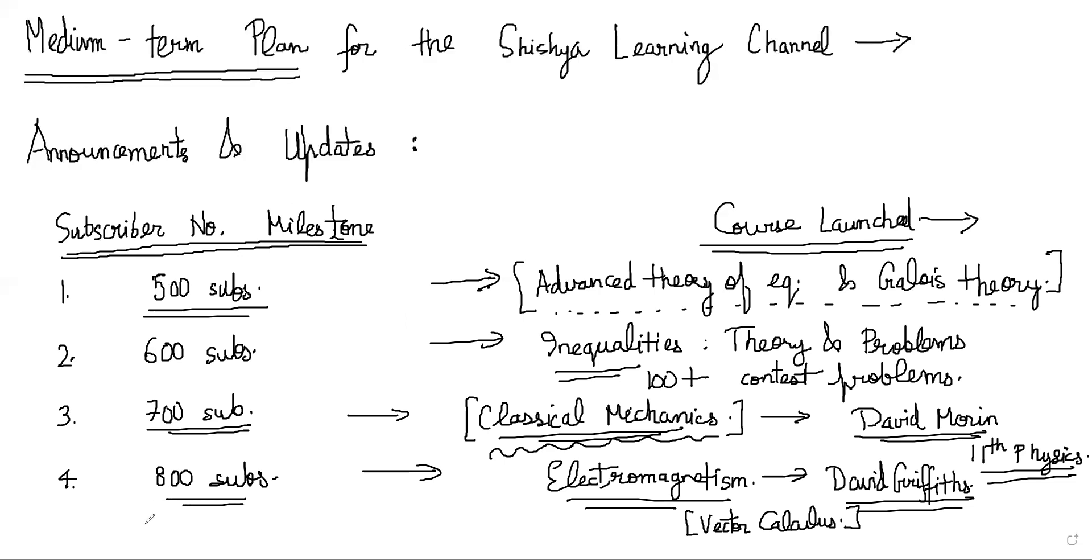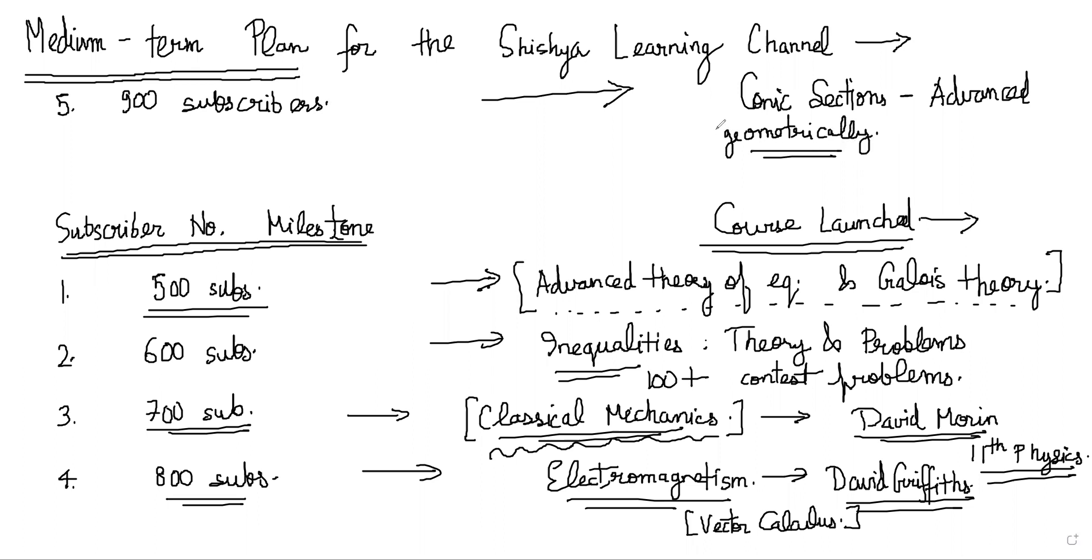On hitting 900 subscribers, the course that I want to launch is Conic Sections: An Advanced Course. This is something that was requested recently, and I want to do it with a little bit of a twist. Obviously, the basic conic sections that you need for Olympiads and mostly for JEE is not very difficult, but what we want to do is approach it a little bit geometrically—doing cross ratios, harmonic pole-polar, etc.